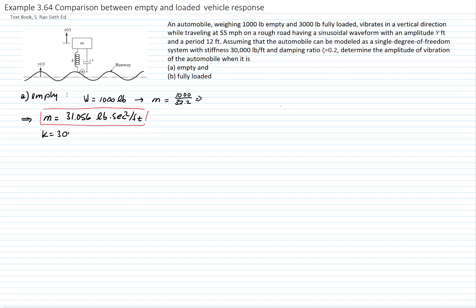We have the spring constant k equal to 30,000 pounds per foot. With the mass and spring constant, we can calculate the natural frequency of the system, which is the square root of 30,000 divided by 31.056. The natural frequency is equal to 31.08 radians per second.